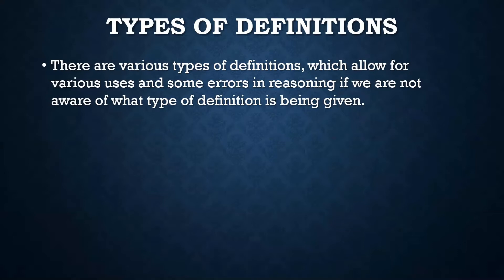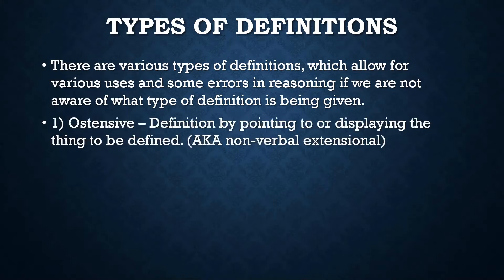Some errors in reasoning often occur because we're not clear on what type of definition is being provided, so it's important to understand the type of definition that is used when a word is clarified, when a word is defined.